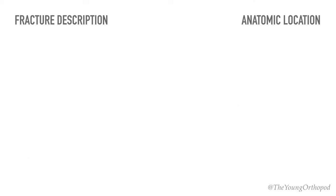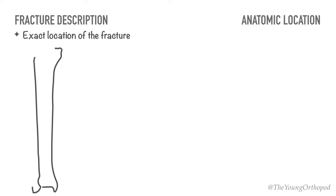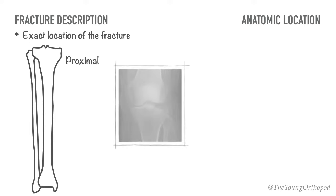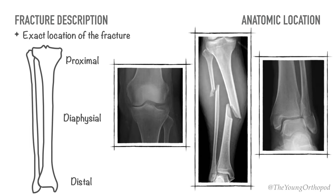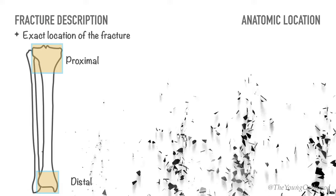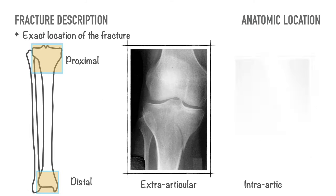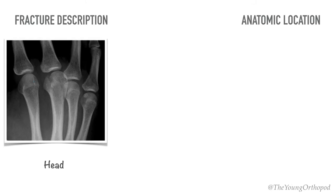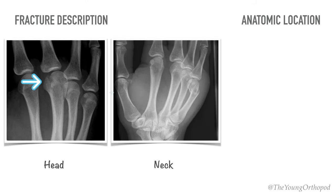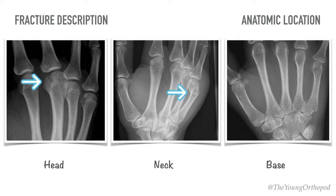Then comes the exact location of the fracture. Long bone fractures can be described as located in the proximal, diaphyseal, or distal part of the bone. The proximal and distal segments are defined by a square based on the widest part of the bone. Proximal and distal fractures may be extra-articular or intra-articular. For many fractures, terms like head, neck, or base fracture may also be used for description.